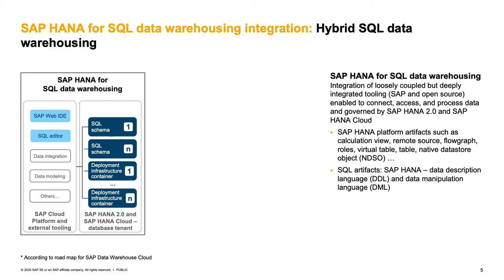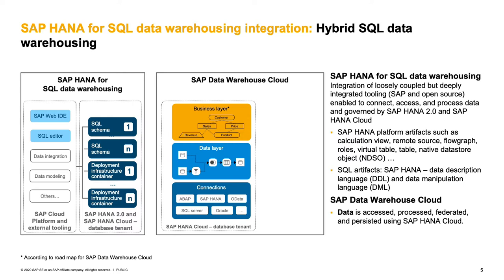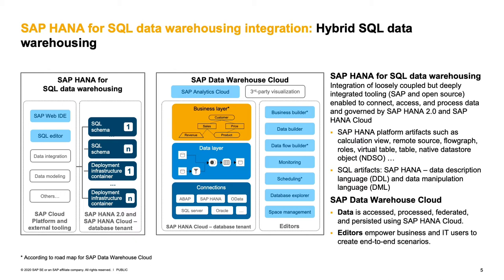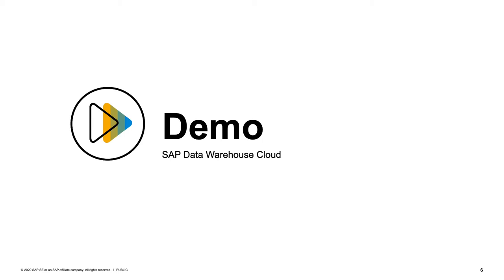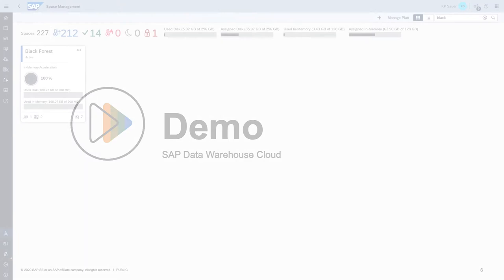In the first scenario, you have an existing Data Mart based on HANA — an existing data warehouse where you build stuff in SQL schemas or HANA Deployment Infrastructure containers. You then have a second system, Data Warehouse Cloud, with its different layers. The integration actually happens where you can connect both on the data layer — SQL schemas as well as HDI containers — and use the existing Data Warehouse Cloud editors to work with that data. That's what you'll see in this first demo.